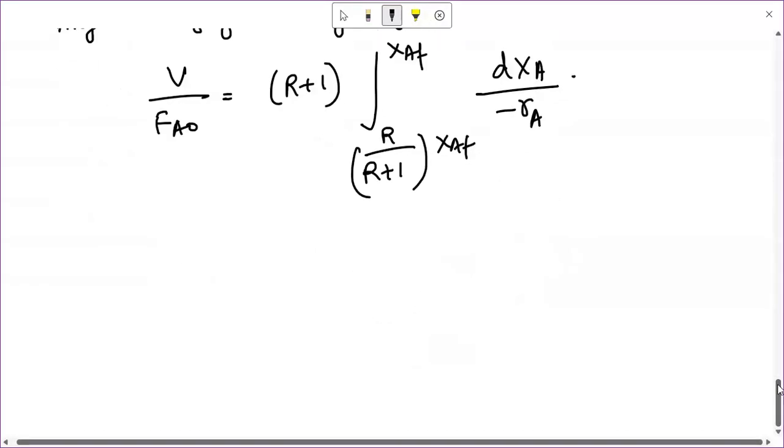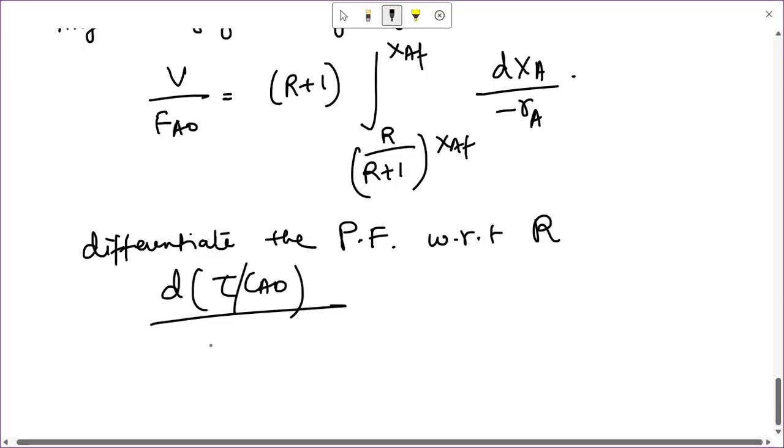This is the performance equation for a recycle reactor. Now to find the optimum recycle ratio, what we would like to do is differentiate the performance equation. Let me call it PF. Differentiate the performance equation with respect to the recycle ratio r, and this will give you the expression to find the stationary point.